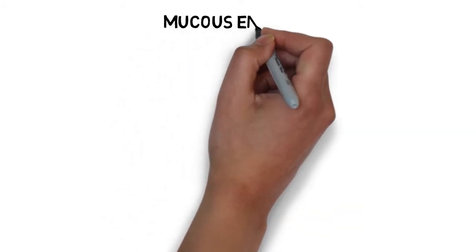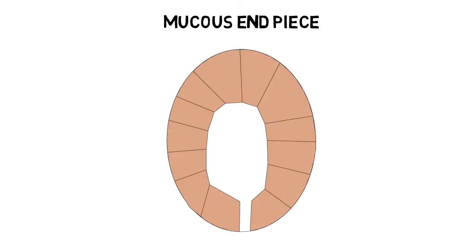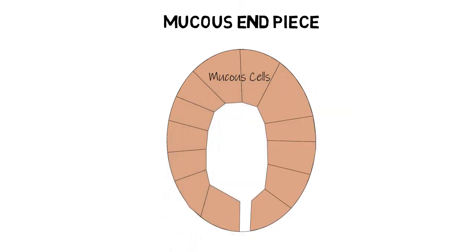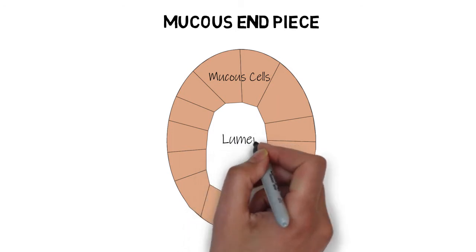The mucous end pieces are typically tubular in shape with a cylindrical or round profile, in which the mucous cells surround a central lumen. The lumen is usually larger when compared with that of the serous lumen.